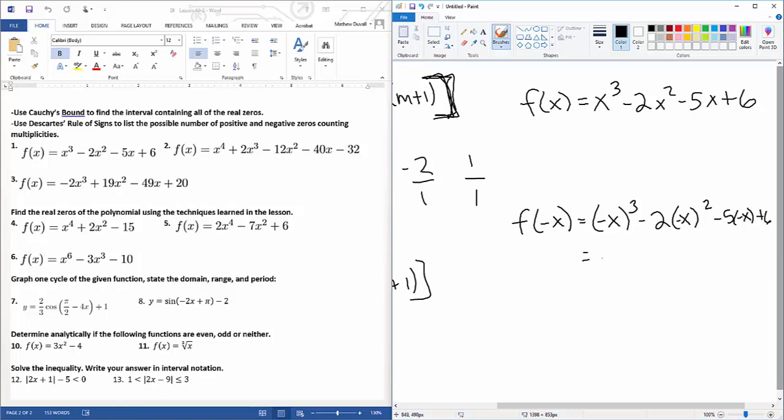So this is going to be negative x cubed minus two x squared plus five x plus six when we simplify it. Now you count the number of times the sign changes, so one, two. Then you count down by an even integer, which is counting down by two until you can't count down anymore. So two or zero positive zeros. And then here, counting no change, so one negative zero.